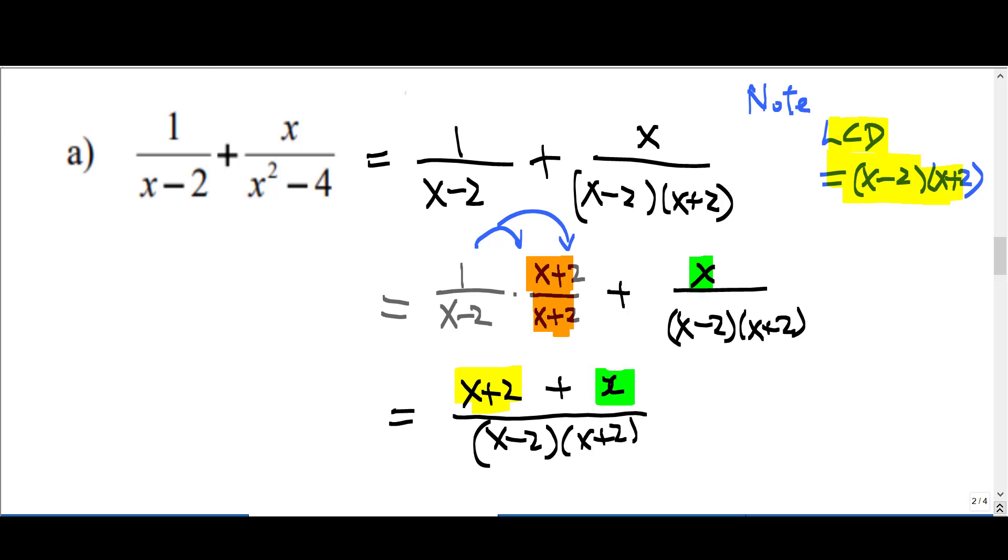So you add them up. You get 2x plus 2 over x minus 2 times x plus 2.